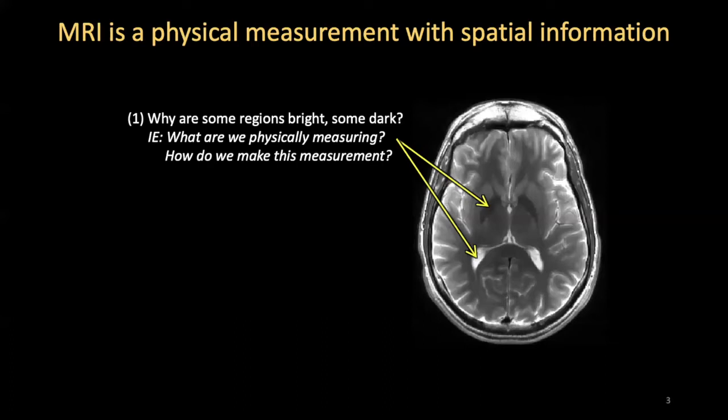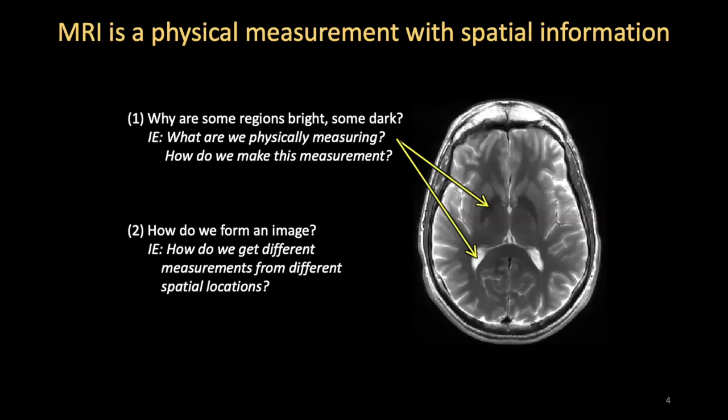This is a general outline of the talk. MRI is a physical measurement with spatial information. The focus of the talk is we're going to look into what is generating the signal itself in MRI — why are some regions bright and some dark, what are we measuring? The last part of the talk will look at how we form an image, how we get signals from different spatial locations. Patrick has gone into more depth in his previous talks, so you can check out the Winehouse wiki site for those slides as well.